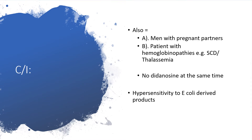Additional contraindications include men with pregnant partners — men whose wives are currently pregnant should not receive PEG interferon. Patients with hemoglobinopathies like sickle cell disease or thalassemia should not receive PEG interferon. Didanosine should not be given at the same time, just as you watch your back when giving ribavirin. And of course, hypersensitivity to E. coli-derived products is also a contraindication.